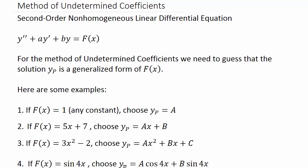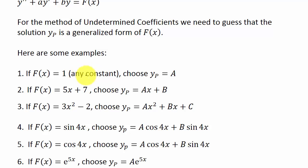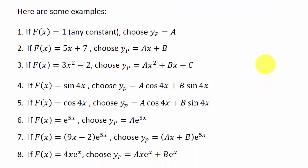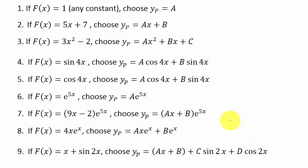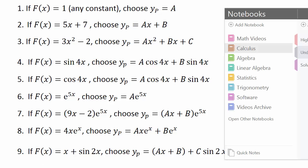Here's my second example for solving differential equations using undetermined coefficients. For the method of undetermined coefficients we're going to guess at a solution y_p based on what f(x) is. If f(x) is 1 or any constant we choose y_p to be A. If f(x) is 5x+7 we'll choose it to be Ax+B, and so on. I put a partial list here — check your differential equations textbook for a more complete list.